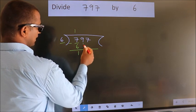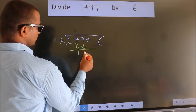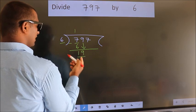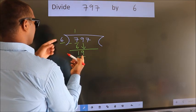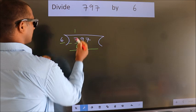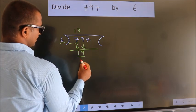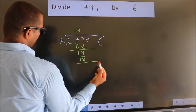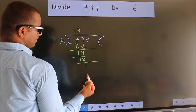After this, bring down the beside number. So 9 down. So 19. A number close to 19 in 6 table is 6 threes, 18. Now we subtract. We get 1.